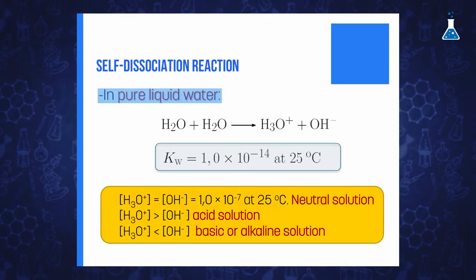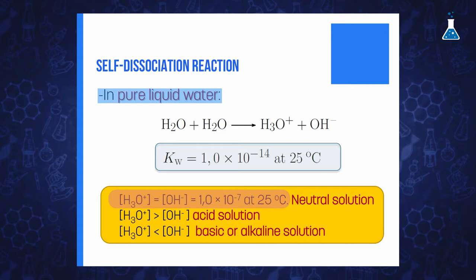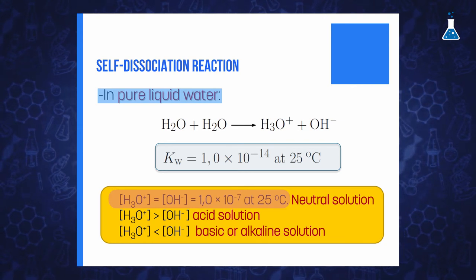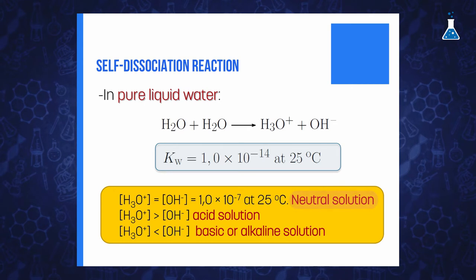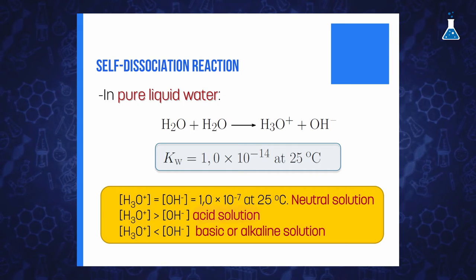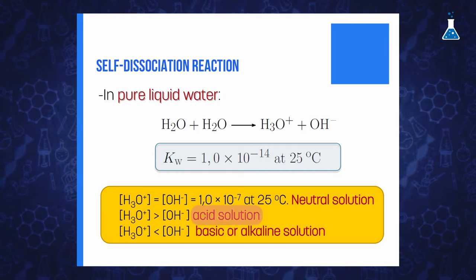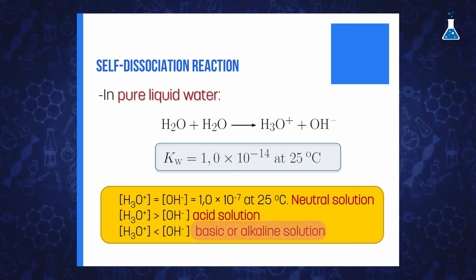Pure water only contains oxydanium and hydroxide ions, and according to stoichiometry, an equal number of both ions must be present. So in pure liquid water at equilibrium, the concentration of oxydanium and hydroxide ions are each equal to 1×10⁻⁷ at 25°C. In general, a solution that has equal concentrations of oxydanium and hydroxide ions is said to be neutral. When a solution contains more hydrogen ions than hydroxide ions it is acidic, while when hydroxide ions are in excess the solution is considered basic or alkaline.